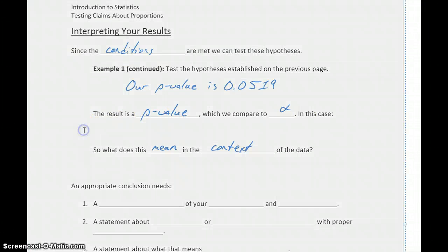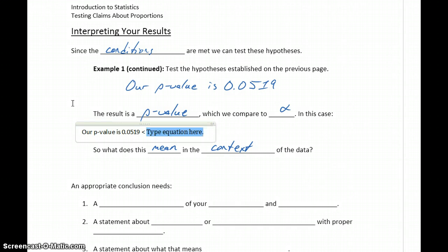So we want to take that p-value and compare it to alpha. So in this case, we could say that our p-value is 0.0519, which is less than alpha, which in this case is 0.1. So, we reject the null hypothesis.